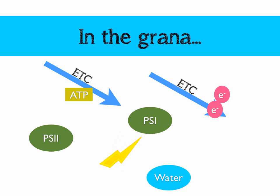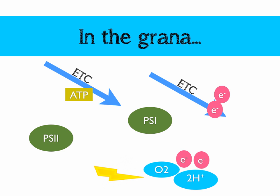We have to split water, and this process is called photolysis. A photon of light is going to hit water and split it into its constituent parts: half O₂ — so molecular oxygen — two electrons, and two hydrogen ions, or two protons.